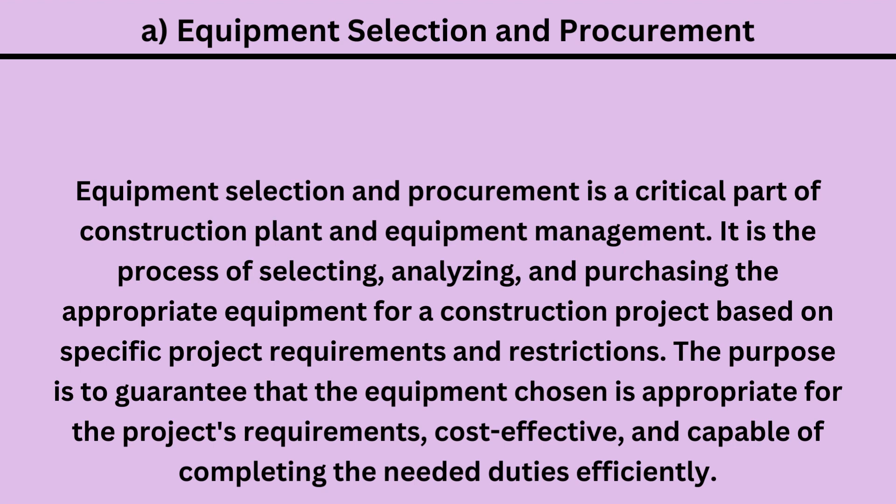Equipment selection and procurement is a critical part of construction plant and equipment management. It is the process of selecting, analyzing, and purchasing the appropriate equipment for a construction project based on specific project requirements and restrictions. The purpose is to guarantee that the equipment chosen is appropriate for the project's requirements, cost-effective, and capable of completing the needed duties efficiently.